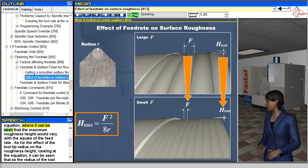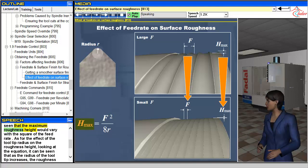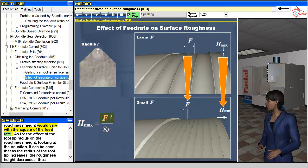Where it can be seen that the maximum roughness height would vary with the square of the feed rate.